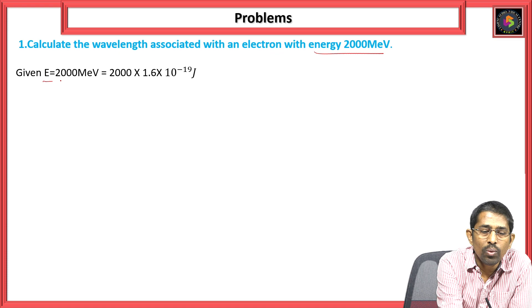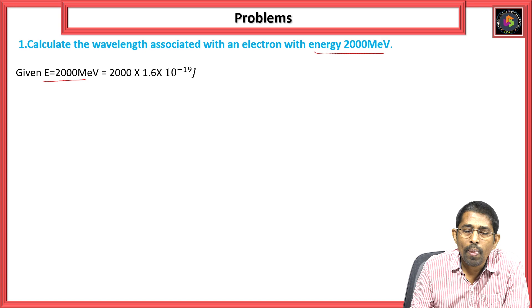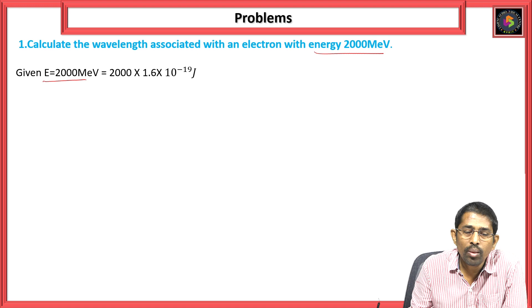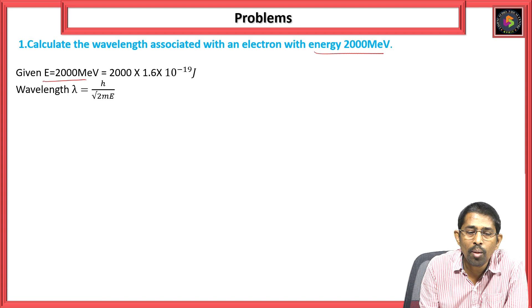Given data: energy is equivalent to 200 MeV, or we are converting this in terms of joules — 200 into 1.6 × 10⁻¹⁹ joules, where E is the charge of an electron. That is how we are converting electron volts into joules by multiplying the charge of an electron.